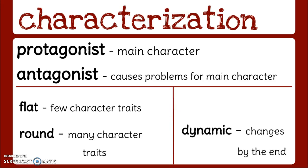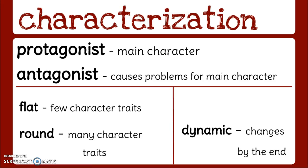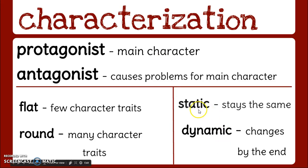We could also describe a character as dynamic, in which they change a lot by the end of the story. In my example about the protagonist who was a bully, by the end of the story he saw the error of his ways and changed a lot in his personality — we would describe him as dynamic — versus a character who is static and stays the same.